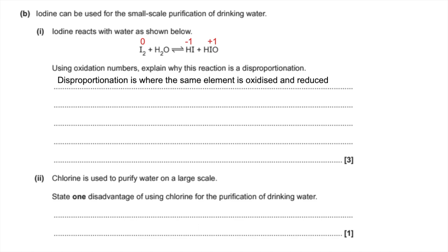And you can see from those oxidation numbers that iodine is the element in question. So iodine's oxidized from zero to plus one in HIO and it's reduced from zero to minus one in HI.